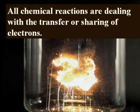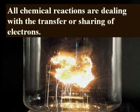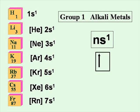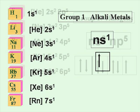All chemical reactions deal with the transfer or sharing of electrons. The group 1 metals all have one electron in their outer orbital and want to lose this electron to acquire a noble gas electron configuration. By the time we get to the halogens, they are only one electron short of a noble gas configuration, so these elements choose to gain one electron to become stable.